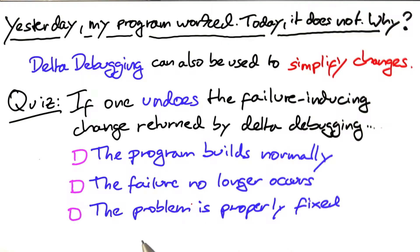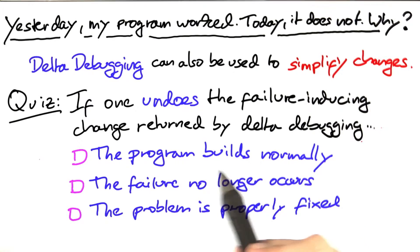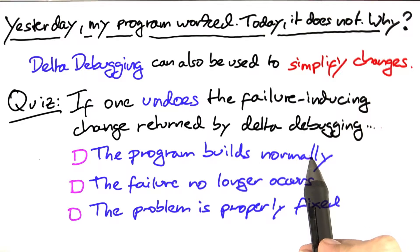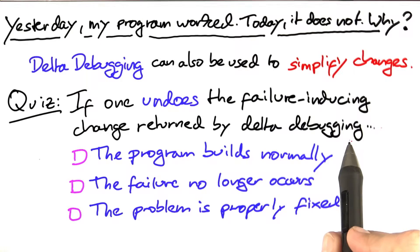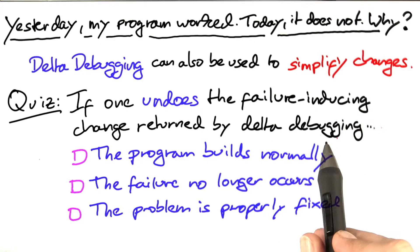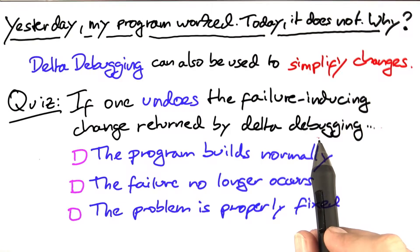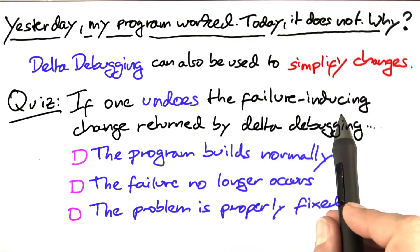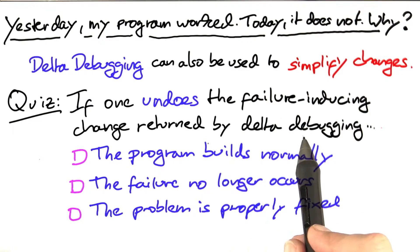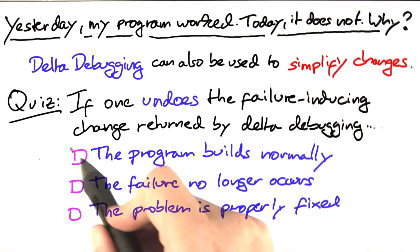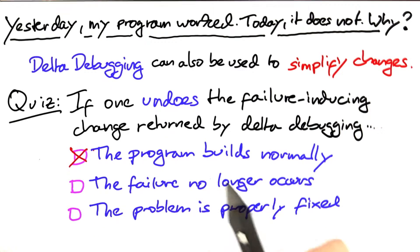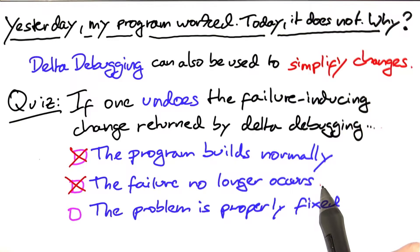And now for the answer. If I undo the failure-inducing change as returned by delta debugging, can I actually build the program? Yes I can, because this is actually tested by delta debugging — that the alternative makes the program pass, so the program should build normally and the failure should no longer occur.